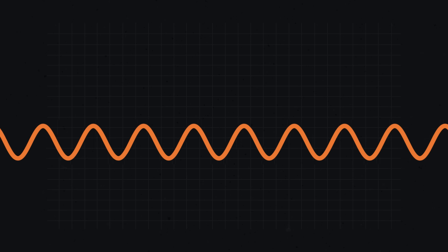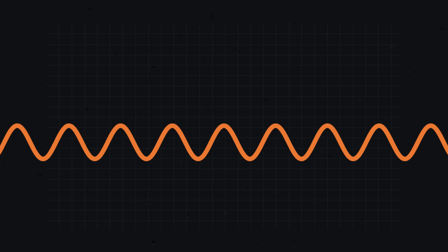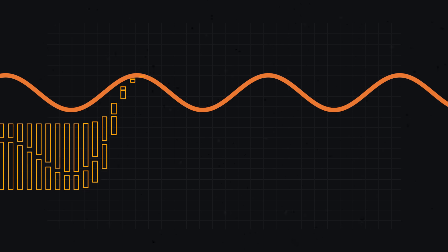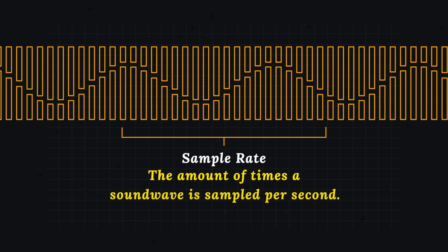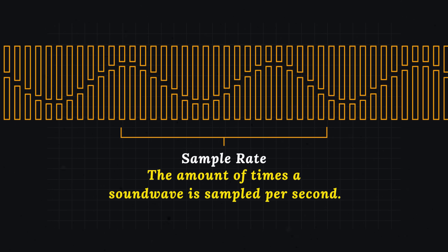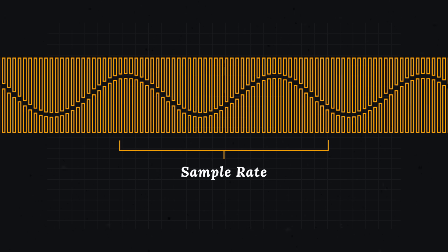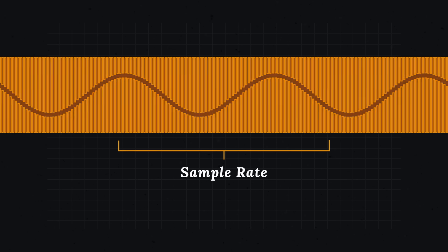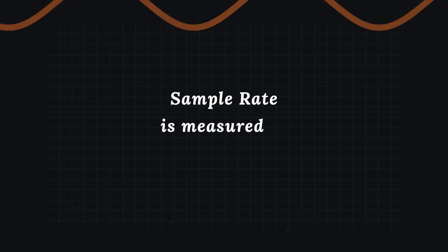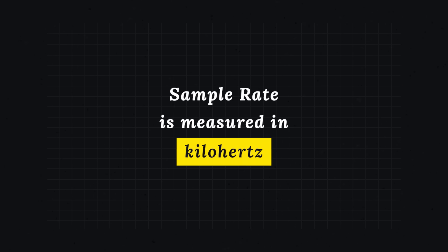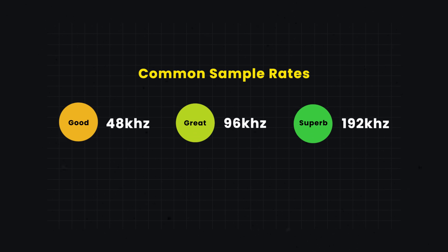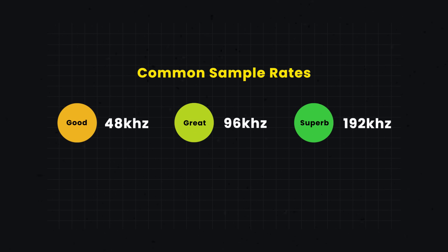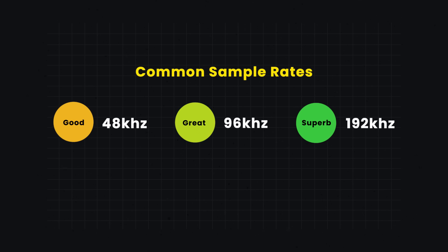Today, the analog signals captured by microphones are translated into digital signals. This conversion is measured by sampling rate — the amount of times a sound wave is sampled when it's being turned into a digital signal. The more samples taken, the more accurate the sound will be. Sample rate is measured in kilohertz, though it is not to be confused with frequency. Most sound mixers won't record at a sampling rate lower than 48 kilohertz, and many will record at higher rates like 96 or 192 kilohertz.